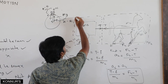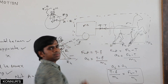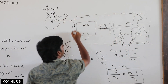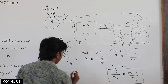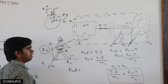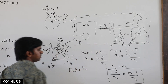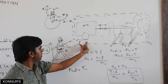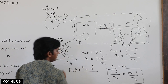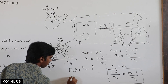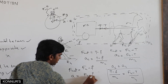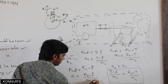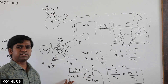If we take horse and cart as a whole system, tension is internal and cancels. Net force is F_H minus F (friction), so acceleration of the whole system equals (F_H minus F) divided by (M_C plus M_H). We can also equate individual accelerations to find tension, friction, or any unknown. Don't memorize the formula — understand how to derive it.